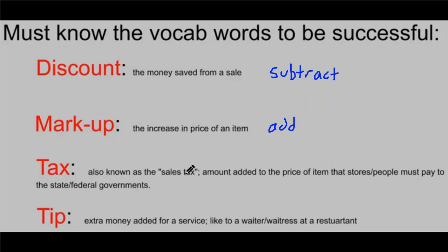Tax is sales tax and that's added to the original price. Think about when you go to 7-Eleven and you get a Slurpee that says it's a dollar. You don't actually pay that dollar — you usually pay like a dollar and five cents. That is a sales tax that's added to the original price.